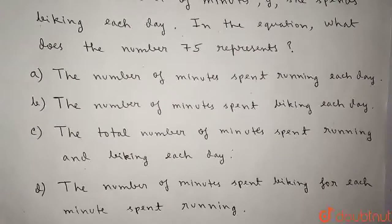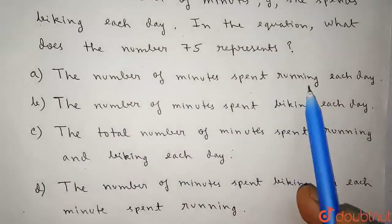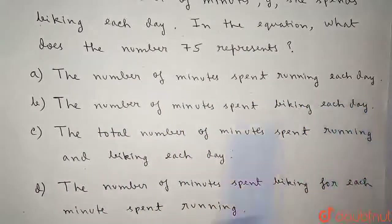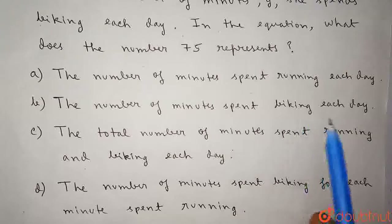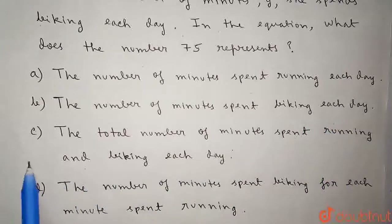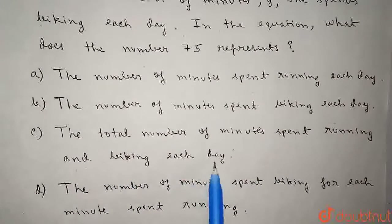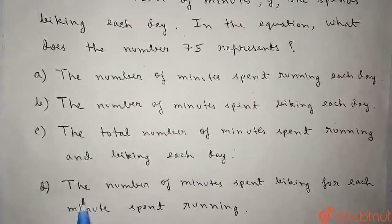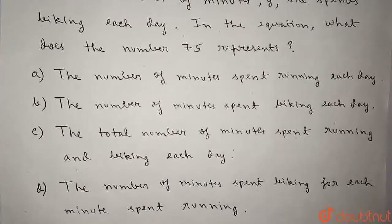Option A is given as the number of minutes spent running each day. Option B: the number of minutes spent biking each day. Option C: the total number of minutes spent running and biking each day. And option D: the number of minutes spent biking for each minute spent running.